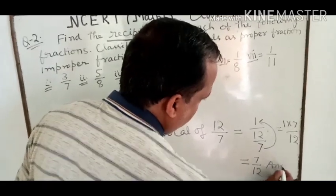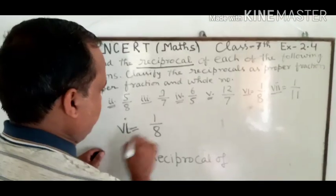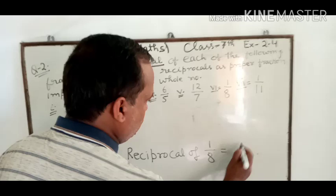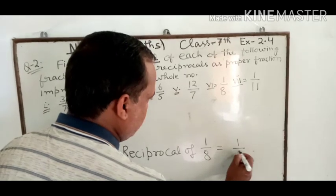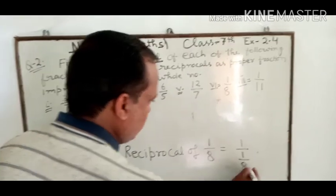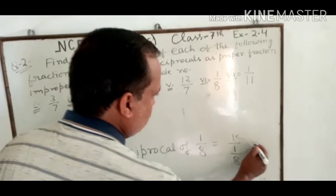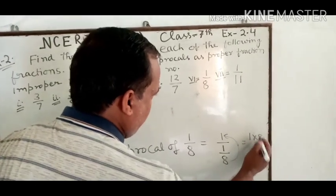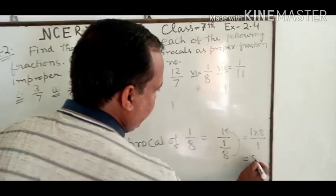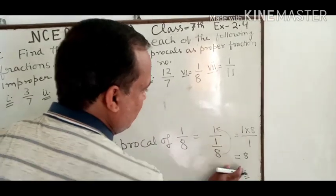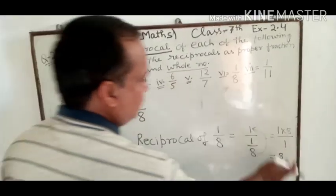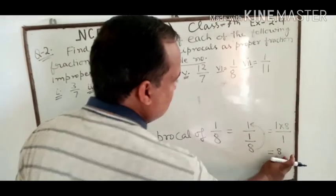Sixth part: 1 upon 8. Reciprocal of 1/8 equals 1 upon (1 upon 8). अब 8 ऊपर shift कर गया, तो 1 multiply 8 upon 1 = 8. नीचे वाले 1 की कोई value नहीं, तो यह whole number 8 हो जाएगा। 8 is your answer.